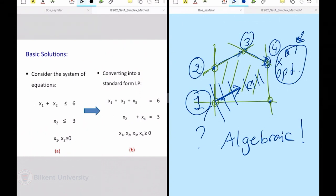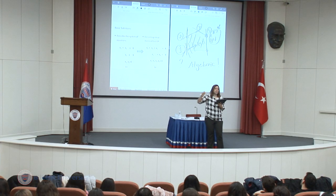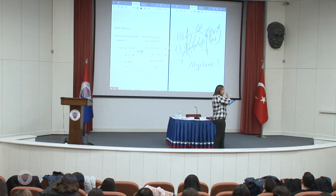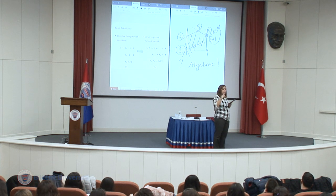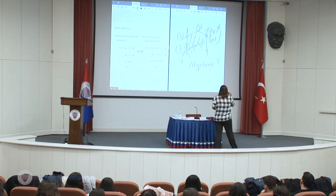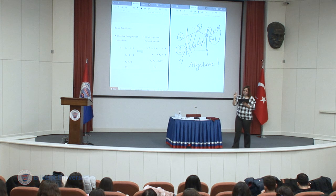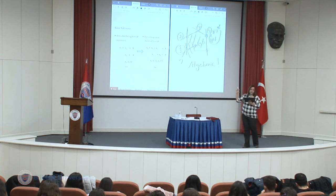It's not just any LP — I want a systematic, structured LP. For that LP, I can say here is the one-to-one correspondence to the corner points, and that's standard form LP. That's why we first converted our LPs to standard form, in order to have this one-to-one correspondence.